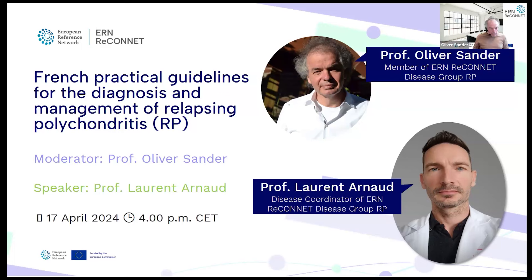On RP emergencies: when a person with relapsing polychondritis arrives at the emergency room, nobody has usually heard of the disease. There are emergency documents for RP within the context of Orphanet, accessible by any emergency department, providing a summary of what can or should be done in an emergency situation for patients with rare diseases. This is also a European project and it is very important to note its existence.